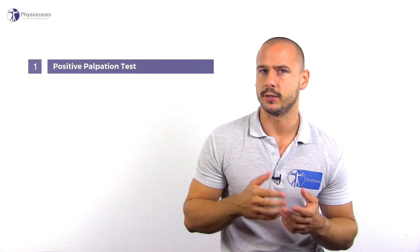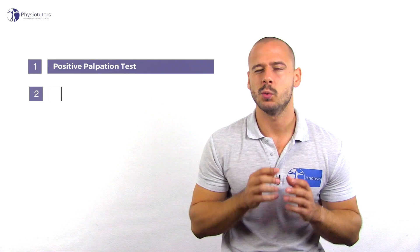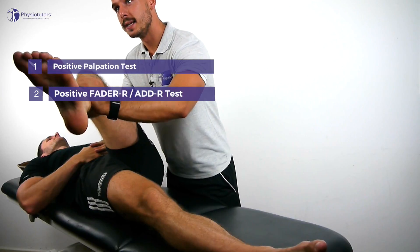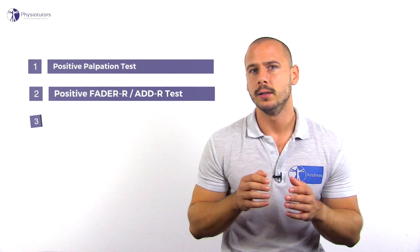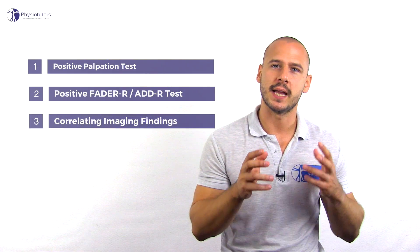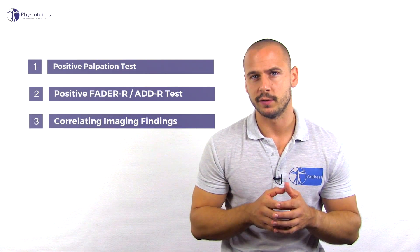Different diagnostic tests for the condition have been covered recently. It has to be said that as standalone tests they only have at most a moderate clinical utility. One may form the clinical diagnosis of GTPS in the event that the patient is positive on palpation of the greater trochanter, plus at least one of the active provocative tests such as the FADA-R or ADDUCTION-R test. Ultimately, the clinical diagnosis can be confirmed by positive imaging findings.